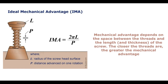Next, let's talk about the mechanical advantage of the screw. Our mechanical advantage is going to depend on the space between the threads — which we know is our pitch — and the length of the actual screw. One thing to understand: the closer the threads are together, the greater the mechanical advantage. If we look over here at our diagram, this gives us the equation we're going to use to get the ideal mechanical advantage.